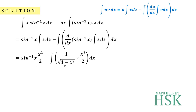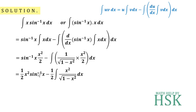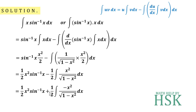There is nothing more to simplify in the first term, so we focus on solving the integral term. Arranging properly, we write (1/2)x²·sin⁻¹(x) minus (1/2)·∫x²/√(1−x²) dx. To handle this, we apply a trick: take the minus sign and place it with x², giving (1/2)x²·sin⁻¹(x) + (1/2)·∫(−x²)/√(1−x²) dx.